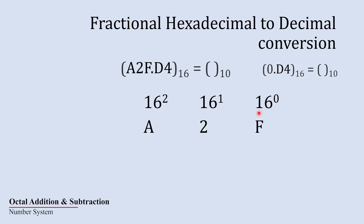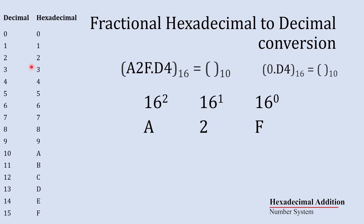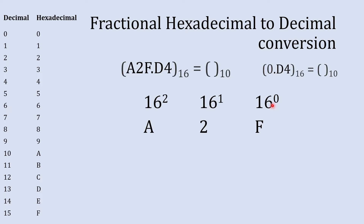We need to multiply 16 raised to 0 by F, but we can't multiply directly by F, so we write its decimal equivalent using the conversion table. The decimal equivalent of hexadecimal F is 15. So we multiply 16 raised to 0 — which is 1 — by 15. Next, 16 raised to 1 multiplied by 2 gives 16 times 2.